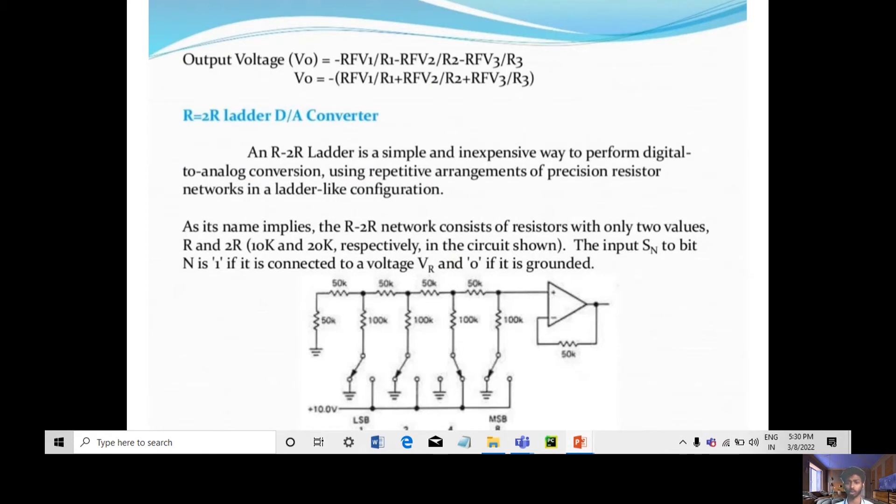As the name implies, the R-2R network consists of resistances with only two values: R and 2R. It is basically a circuit block where each input bit is connected between the reference voltage VR and ground.